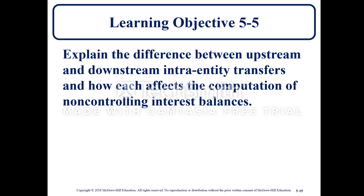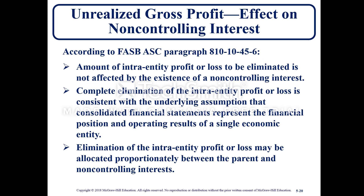Learning Objective 5-5: Explain the difference between upstream and downstream intra-entity transfers and how each affects the computation of non-controlling interest balances. There are upstream transfers — subsidiary to parent — and downstream transfers — parent to subsidiary. According to FASB ASC paragraph 810-10-45-6, the amount of intra-entity profit or loss to be eliminated is not affected by the existence of a non-controlling interest. Complete elimination of the intra-entity profit or loss is consistent with the underlying assumption that consolidated financial statements represent the financial position and operating results of a single economic entity. Elimination may be allocated proportionally between the parent and the non-controlling interest.